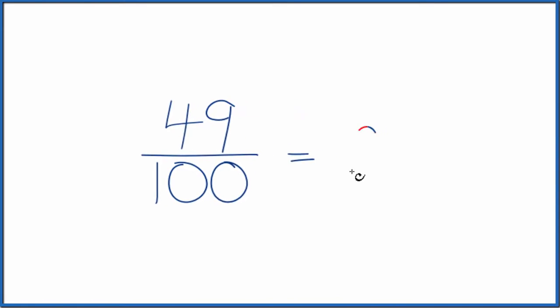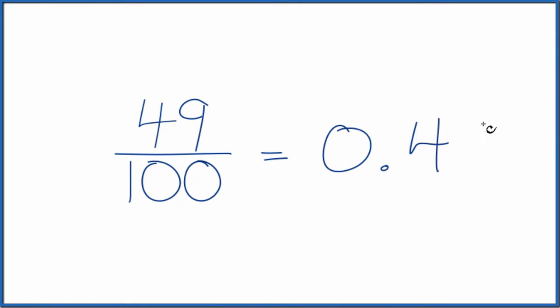You'd end up with 0.49. So the fraction 49 over 100, that's equal to the decimal 0.49.